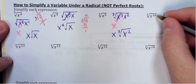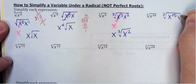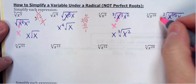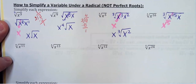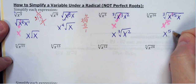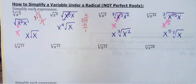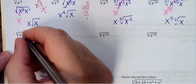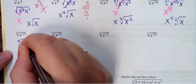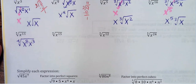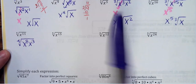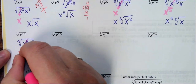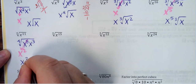Sometimes you can have larger exponents. For the cube root of x¹⁶: the biggest multiple of 3 in 16 is 15, so I write x¹⁵·x. Dividing the exponent by 3 gives x⁵, with x left underneath — so x⁵·∛x. For a fourth root of x¹¹: the biggest multiple of 4 in 11 is 8, so x⁸·x³. Dividing 8 by 4 gives x², so this is x²·∜(x³).